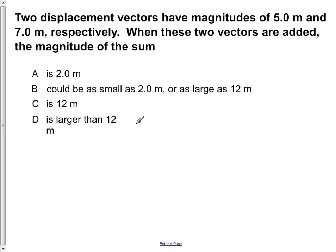A is 2 meters, B can be as small as 2 meters or as large as 12 meters, C is 12 meters, or D is larger than 12 meters.